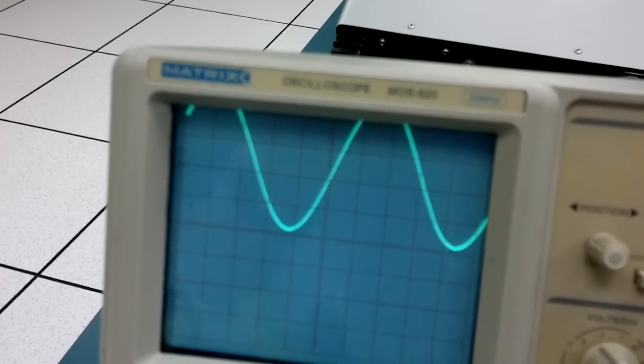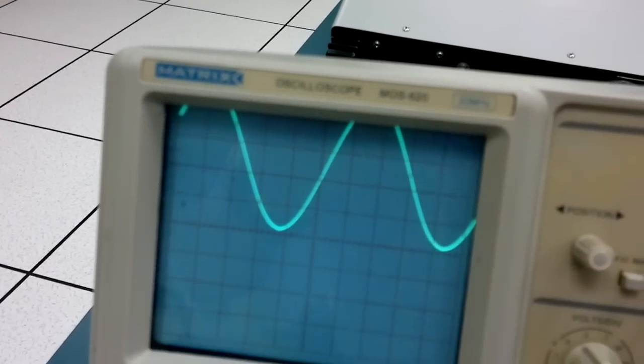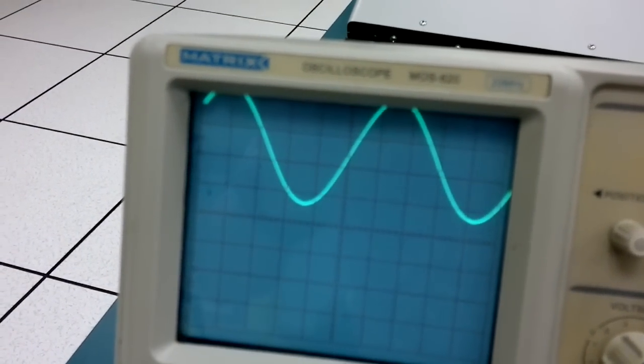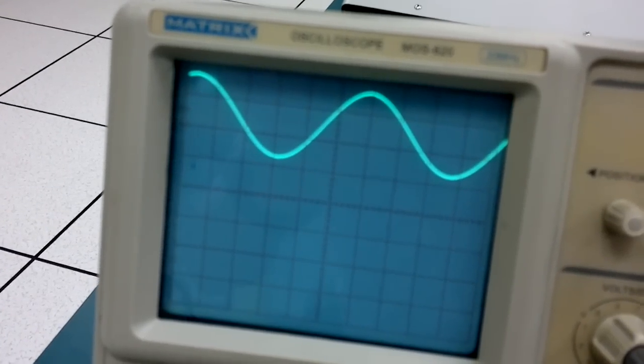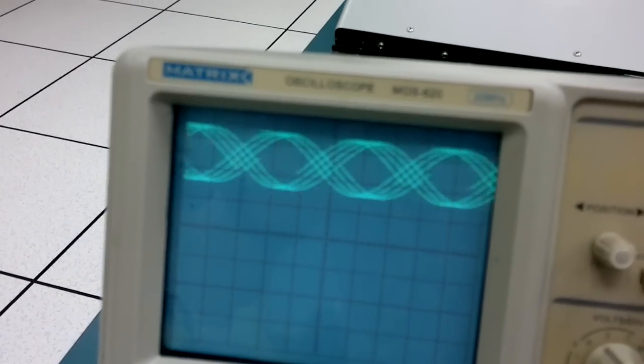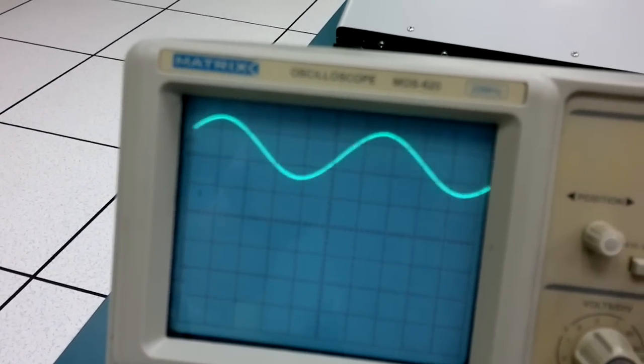Sometimes you don't want a signal to go less than ground. And if you adjust amplitude, that can make the signal smaller and so on. Let's just trigger our scope a little bit better. There you go. Just nice.